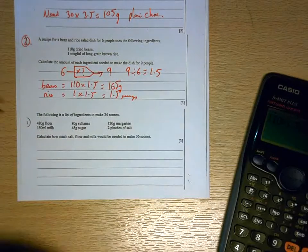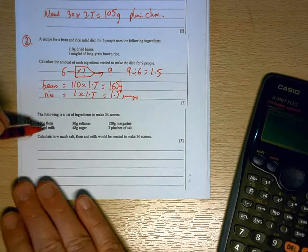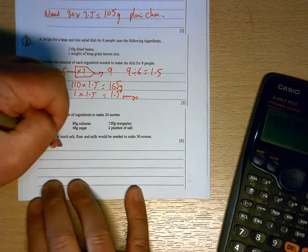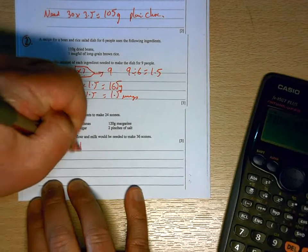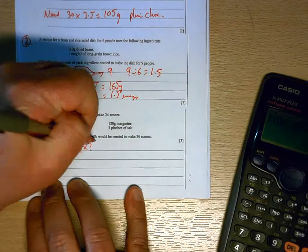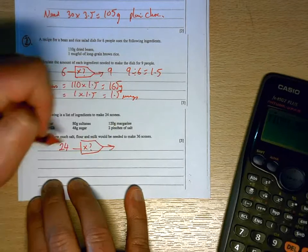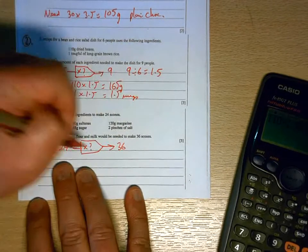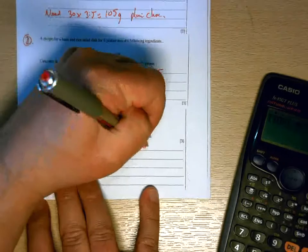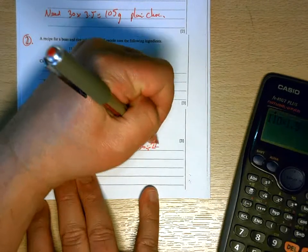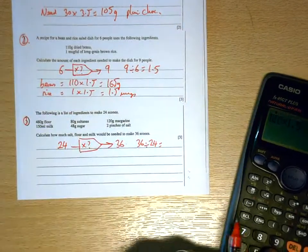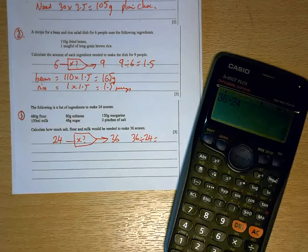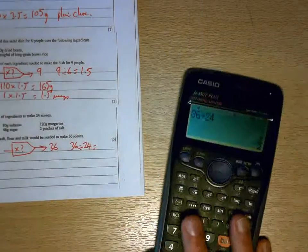Third question. This recipe is for 24. We need to scale it for 36. So it's the same starting point for each of these. What have I got to multiply my recipe by in order to go from 24 to 36. So we'll do 36 divided by 24, which again is 1.5.